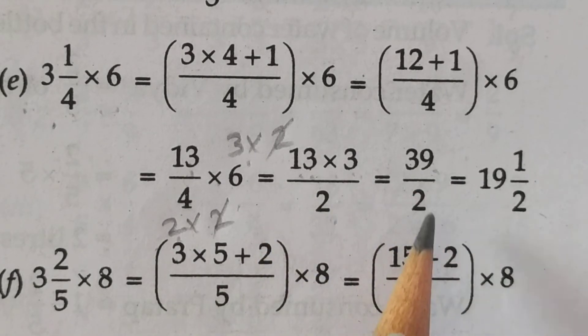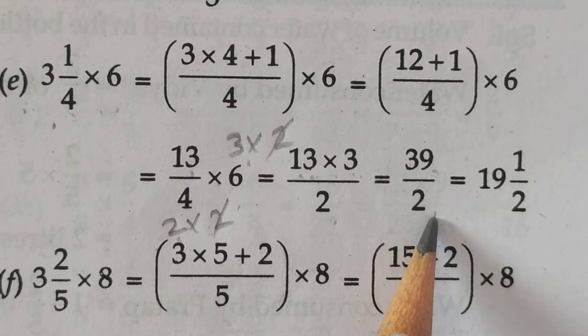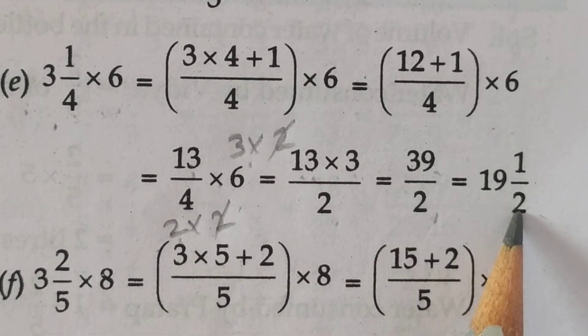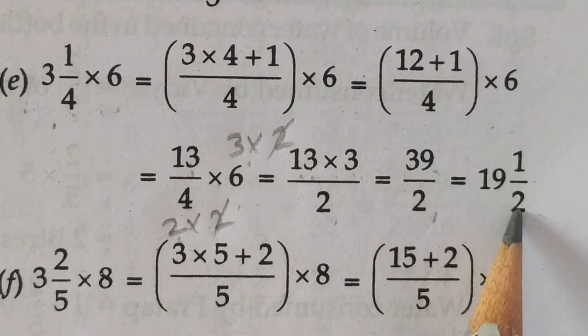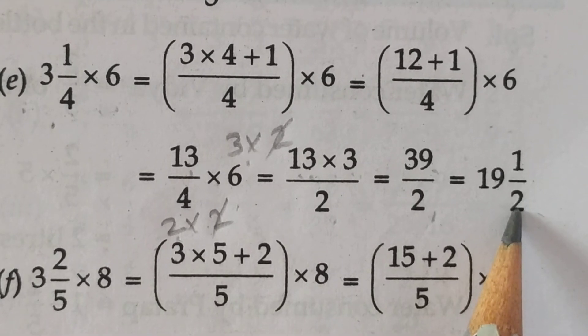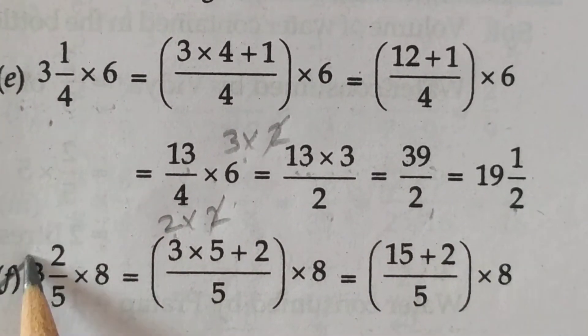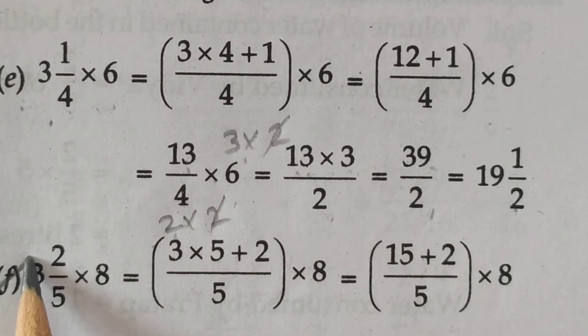Now students, 39 upon 2 is an improper fraction. By division, we can convert it into a mixed fraction. Do division and convert it into mixed. Now students, part F also you have to do in your homework.